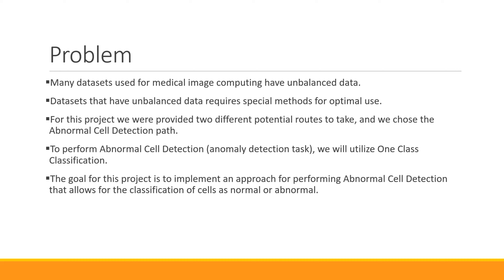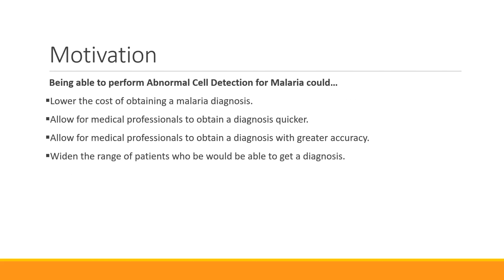For this we opted to utilize something called one class classification. This is a common way of tackling the anomaly detection task, which is the type of task we'll be tackling. The goal is to implement an approach for performing abnormal cell detection where we can generate models that determine whether cells are normal or abnormal. Being able to perform abnormal cell detection with pictures of malaria cells could potentially lower the cost of obtaining a malaria diagnosis.